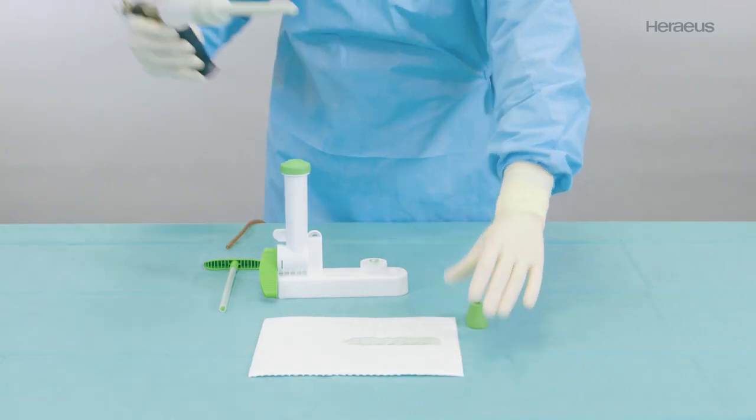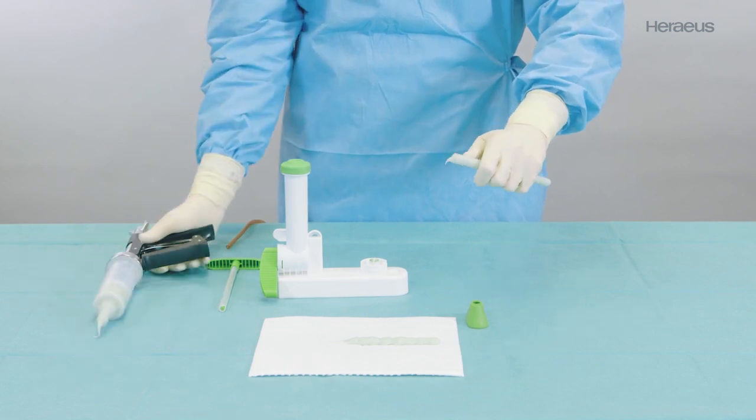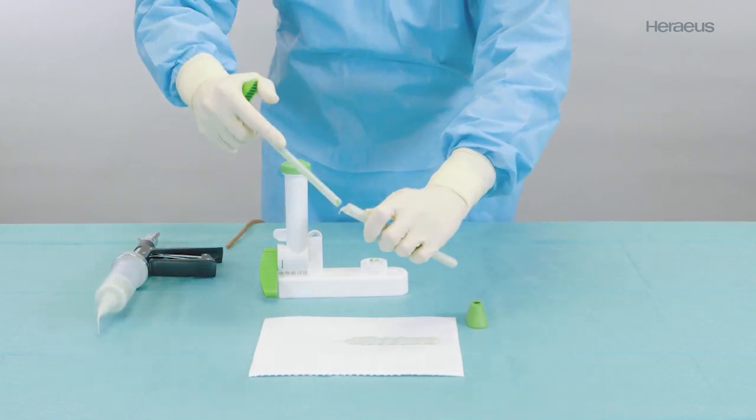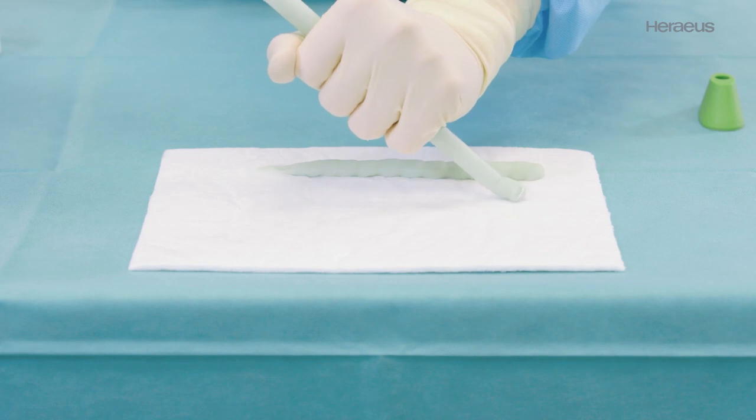Break off the nozzle at the predetermined breaking point. You can expel the remaining cement out of the application nozzle with the aid of the mixing rod.